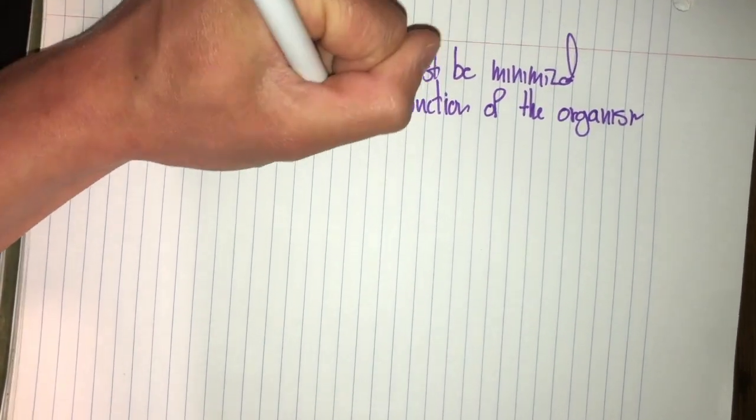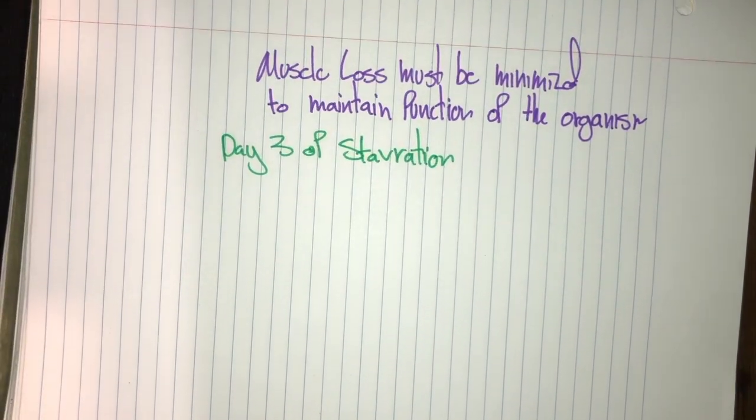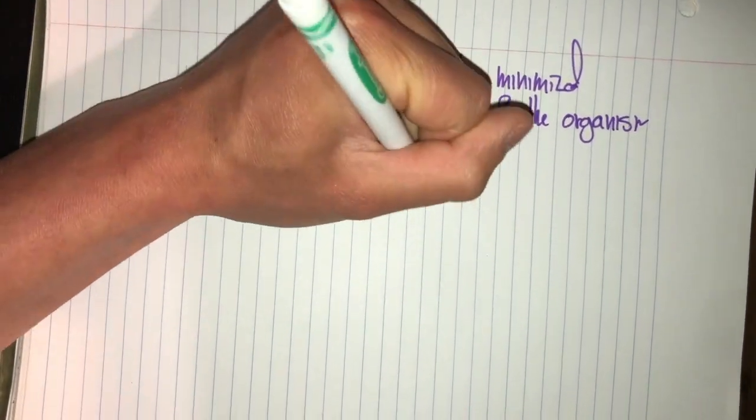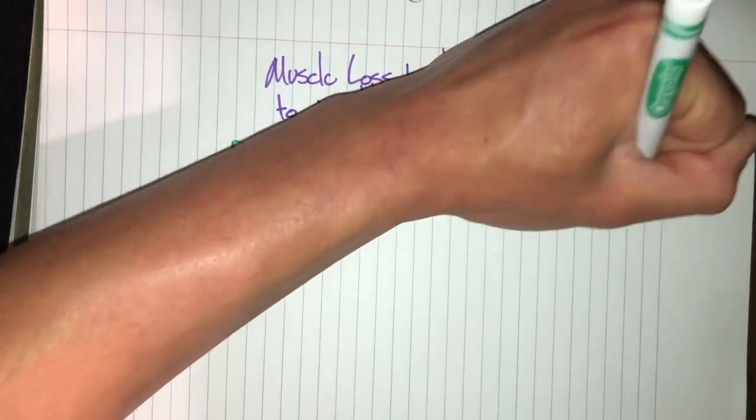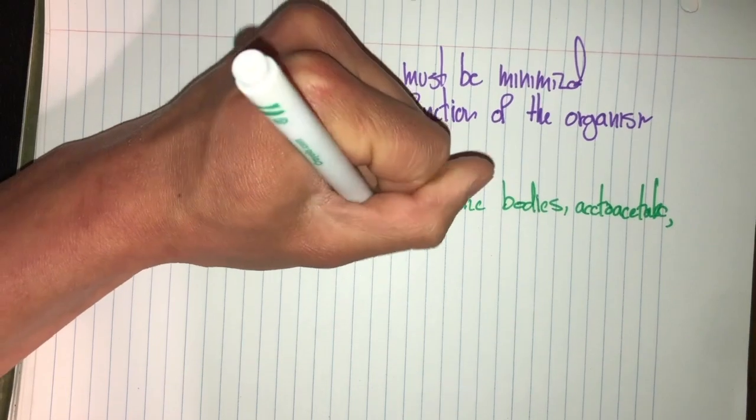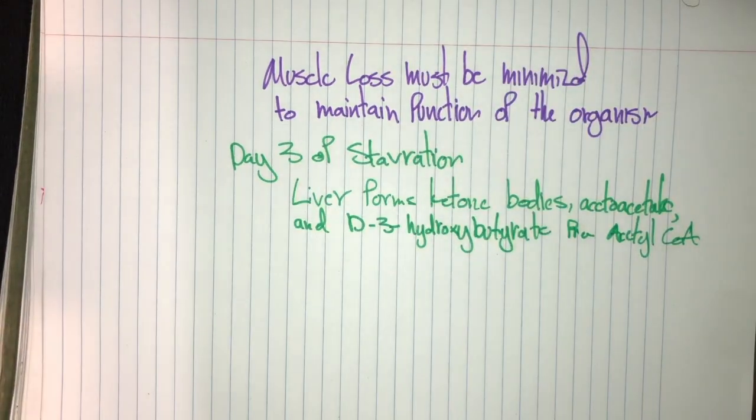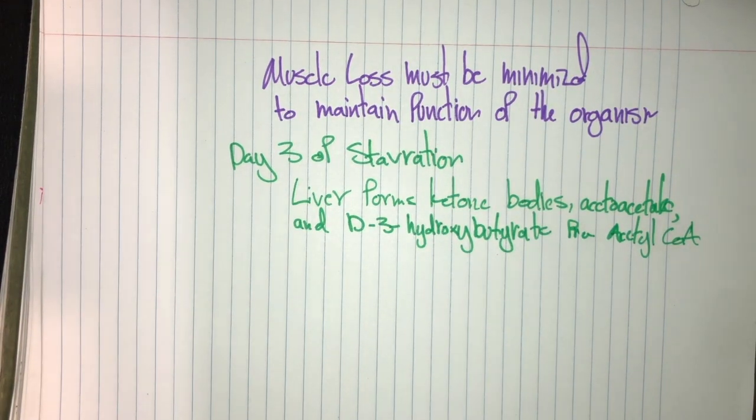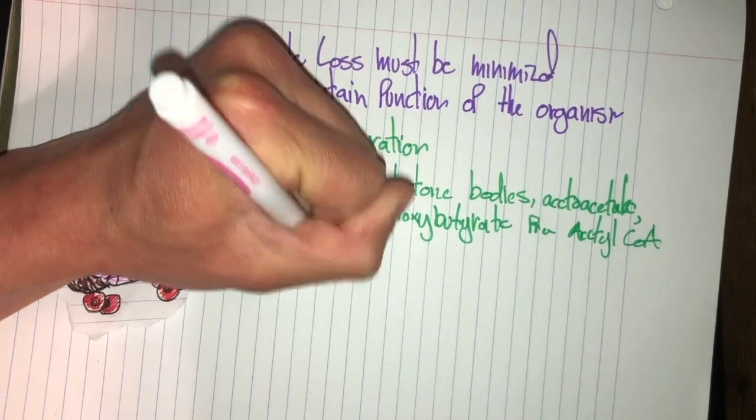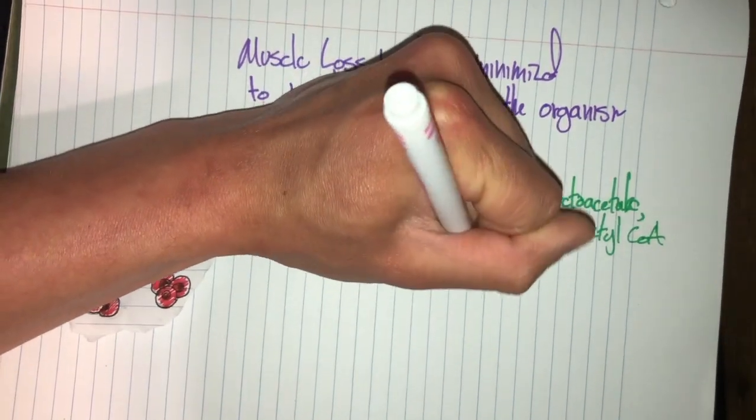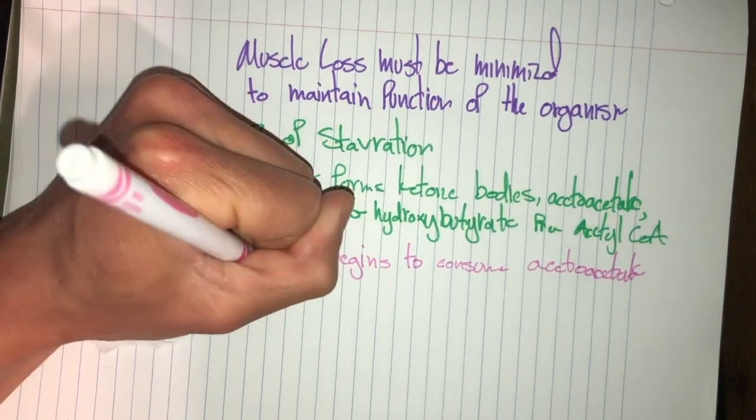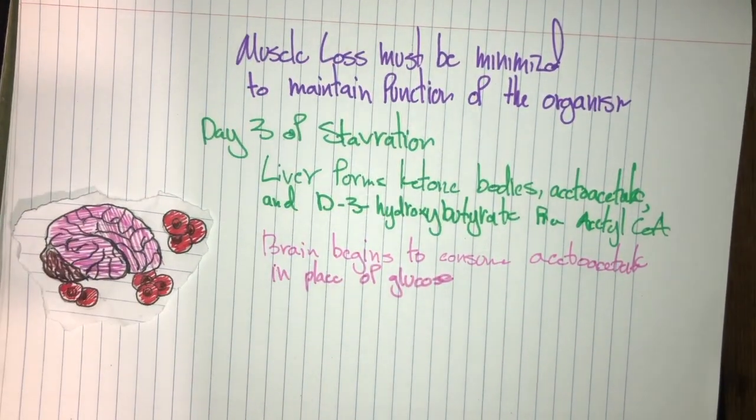All right, so we're going to talk about muscle loss. It must be minimized, as we were saying, to maintain function of the organism. On day three of starvation, the liver begins to form ketone bodies: acetoacetate and D-3-hydroxybutyrate, all from acetyl-CoA. The brain then begins to consume acetoacetate in place of glucose, and a third of its energy needs are met by ketone bodies. As well, the heart also uses the ketone bodies.